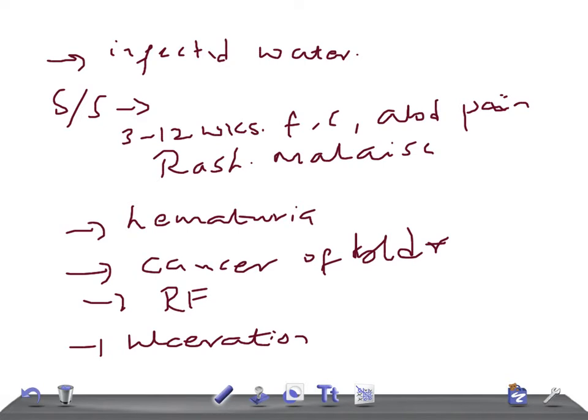If it affects the liver, it can lead to hepatosplenomegaly, portal hypertension, ascites, and hematemesis—vomiting of blood. This is caused by S. mansoni and japonicum because they live in the liver.